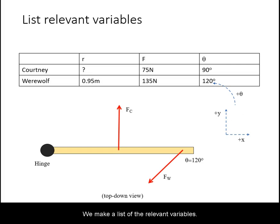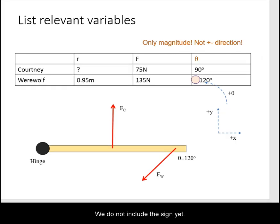We make a list of the relevant variables. Note that in this solution method, we only care about the magnitude of the angle and hence torque at first. We do not include the sign yet.